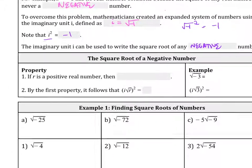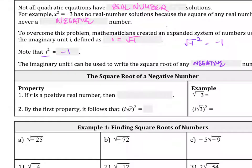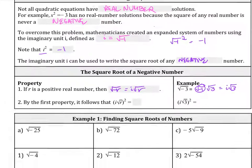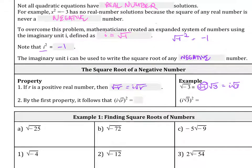If r is a positive real number, then the square root of negative r equals I times the square root of r. For example, the square root of negative 3 can be written as the square root of negative 1 times the square root of 3, and that negative 1 just becomes an I, giving us I root 3.